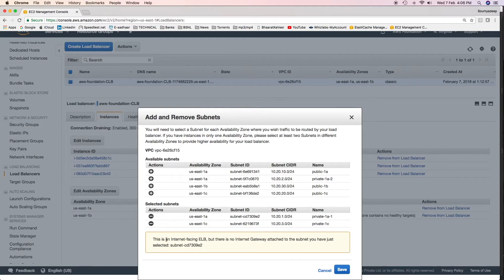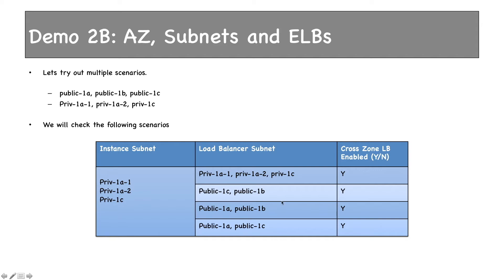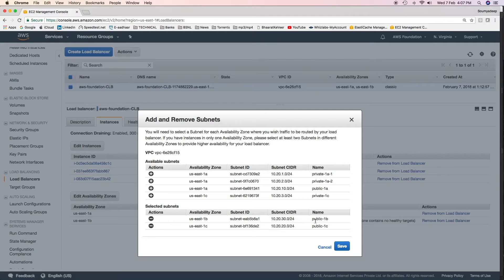When I try to choose all the private subnets, it gives me an error saying that since this is an internet-facing load balancer, there is no internet gateway attached to the subnet selected — meaning I need a public subnet for the load balancer AZ. So let's add public 1c and public 1b in the load balancer subnets. We have EC2 instances in public 1c but not in public 1b. I've now added public 1b and public 1c AZ to the load balancer subnet.